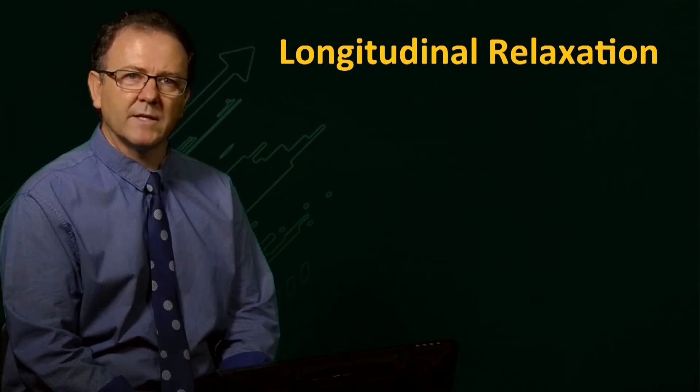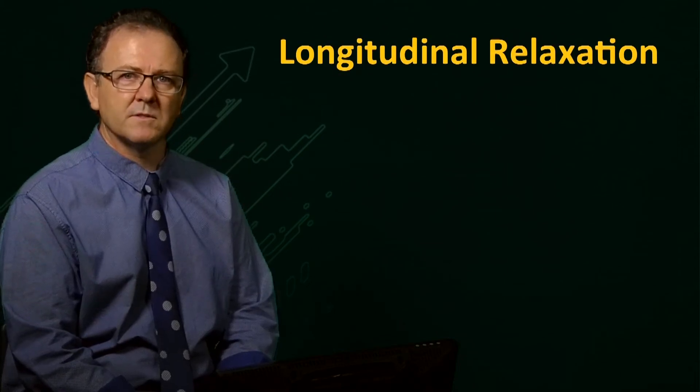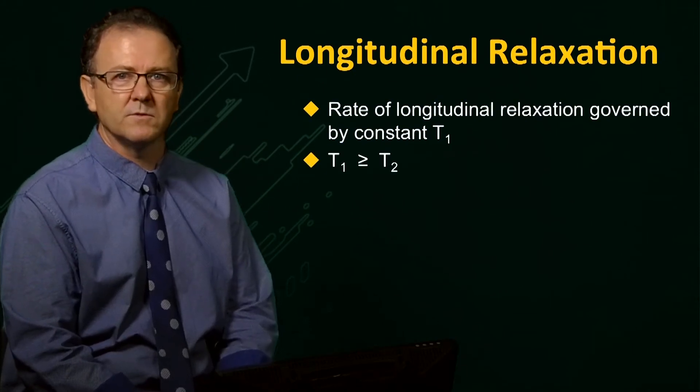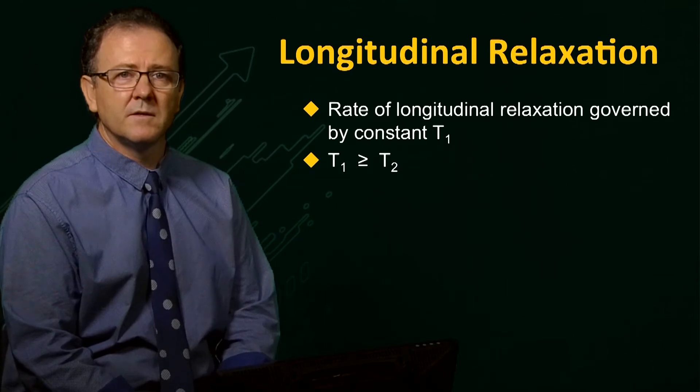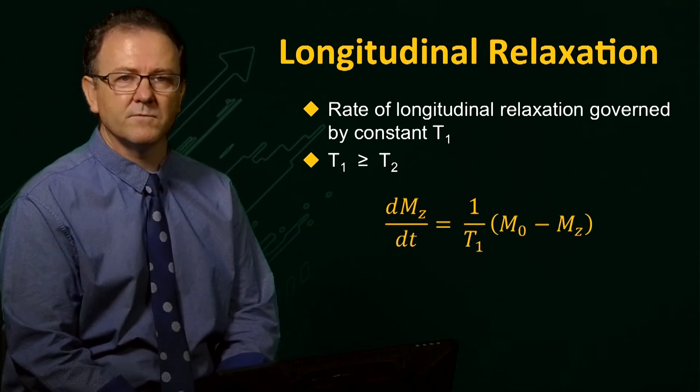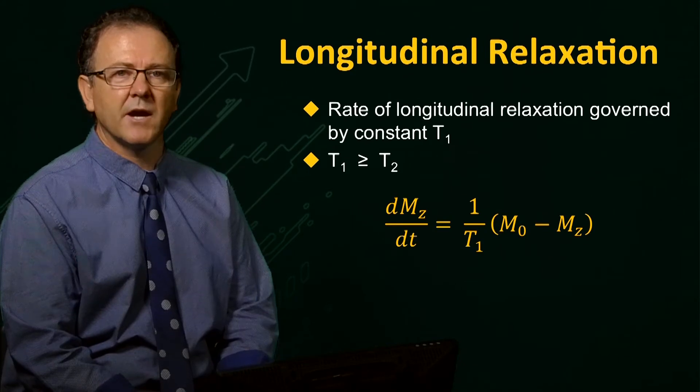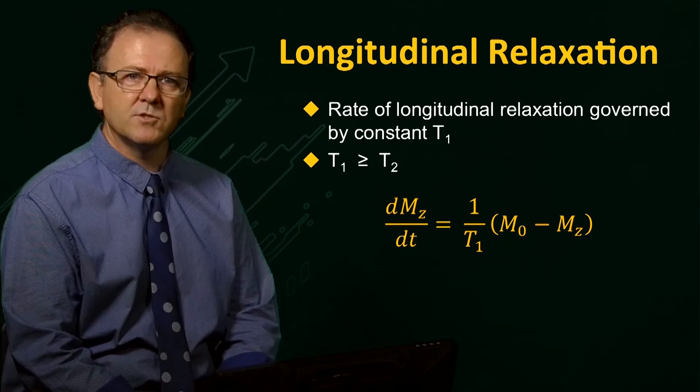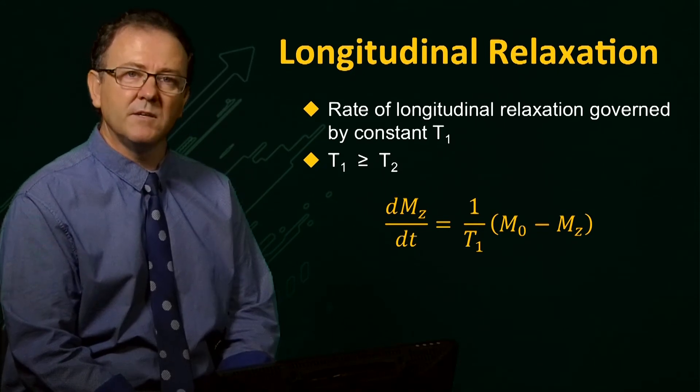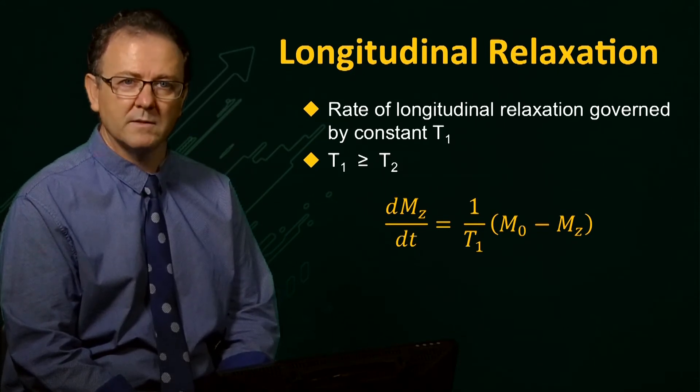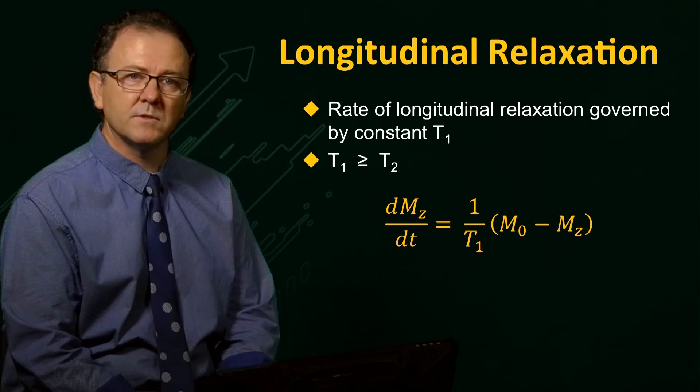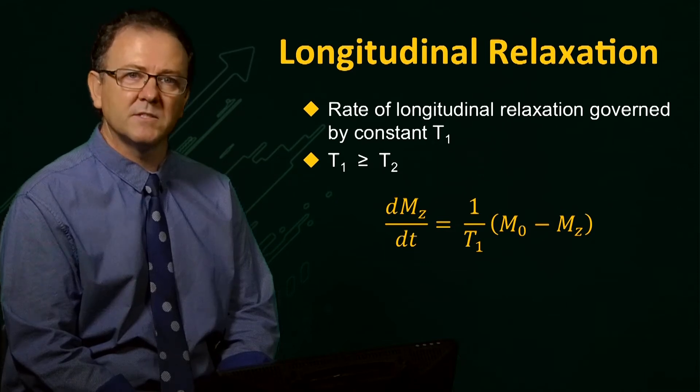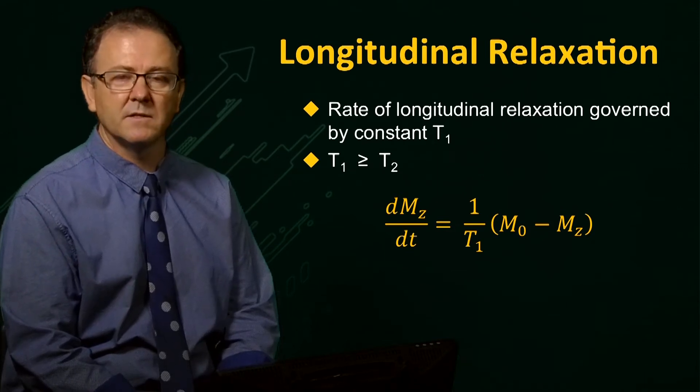The rate of longitudinal relaxation is governed by a rate constant, T1. And as I have just said, T1 is always greater than or equal to T2. This equation, known as the Bloch equation for Z-magnetization, characterizes the relaxation process. The rate of change of Z-magnetization with time is inversely proportional to T1, and proportional to the difference between the equilibrium value of the magnetization, M0, and the Z-magnetization at time T, Mz.